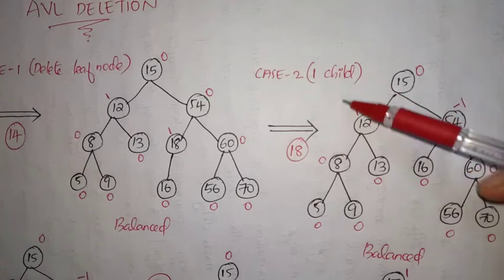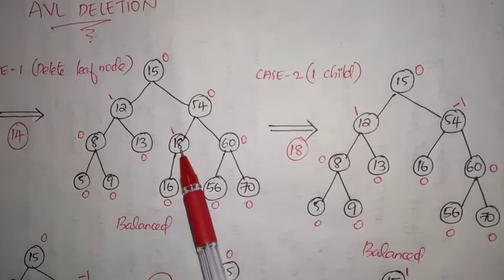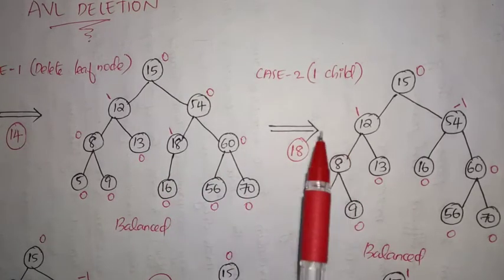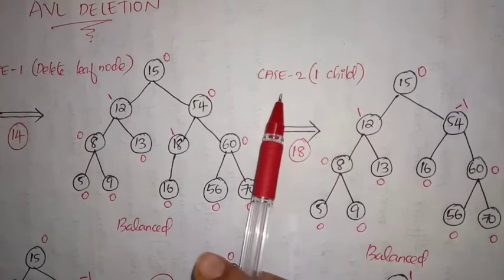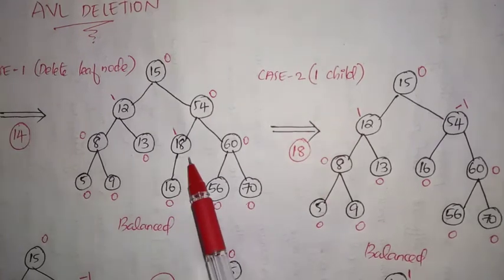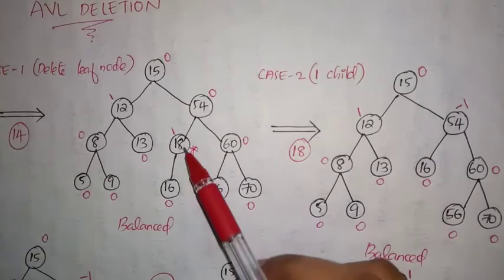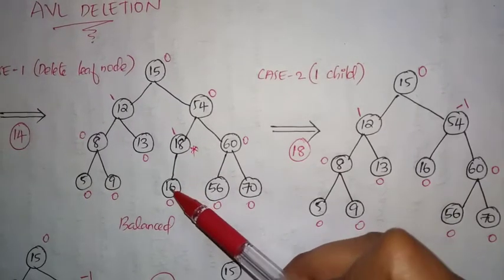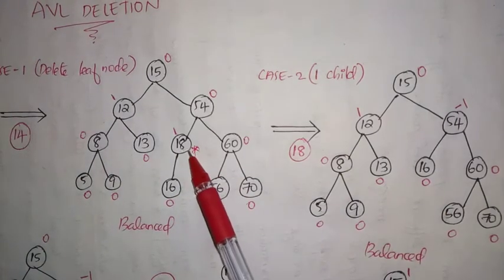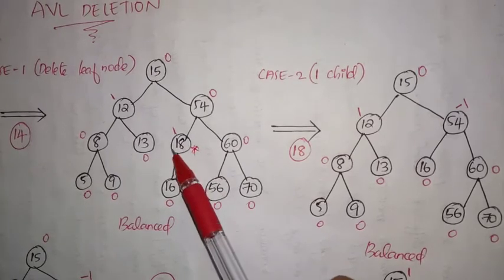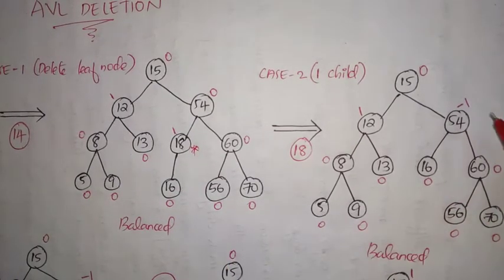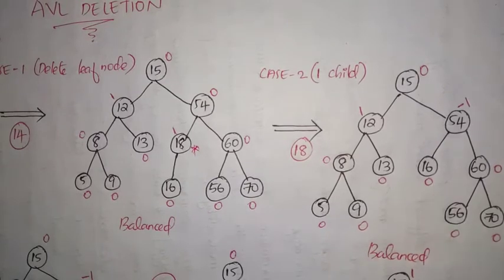The second case is that we need to delete a node that has one child. Suppose from this tree we have to delete node 18, and 18 has a single child — either left or right. In such a scenario — deletion of a node with one child — we delete the specific node directly, and the child of that node is placed in its position. So here, 18 is deleted and its child 16 is placed in place of 18.